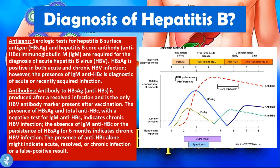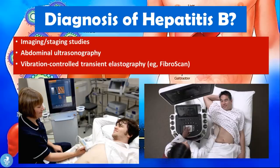Continuing with the diagnostic process, we can also use imaging and staging studies, including abdominal ultrasound and vibration-controlled transient elastography — the FibroScan or FibroMax — which examines the mechanical structure of the liver and can determine what stage the patient is at in terms of hepatitis, liver cirrhosis, or development of hepatocellular carcinoma.